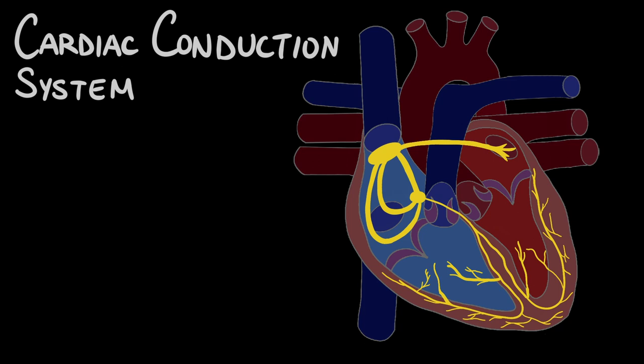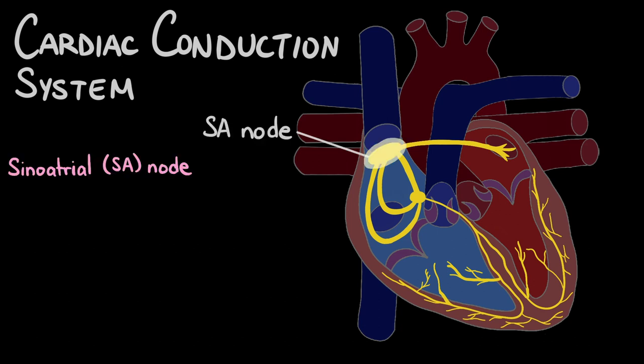The most important part of the cardiac conduction system is the sinoatrial node, which is located right here at the edge of the upper right atrium of the heart, near the superior vena cava.